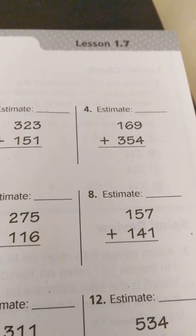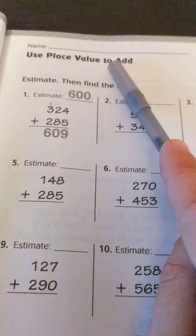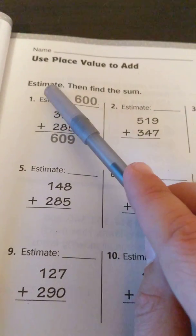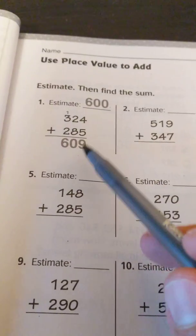This is third grade Go Math lesson 1.7 and today we're going to use place value to add. As the directions say, estimate and find the sum, but as you see this is basically the way that we learned how to add.